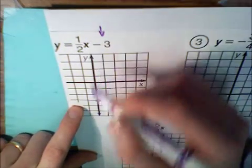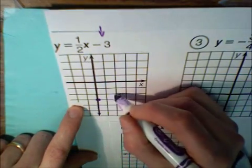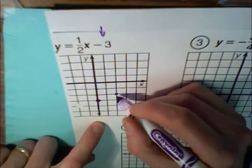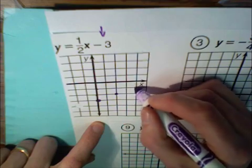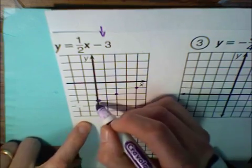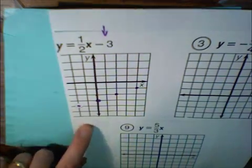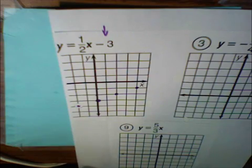Our slope is 1/2. That is rise 1, run 2. So there's our second point. We want to graph this several times. Rise 1, run 2. We can go in the negative direction. Rise negative 1, run negative 2.